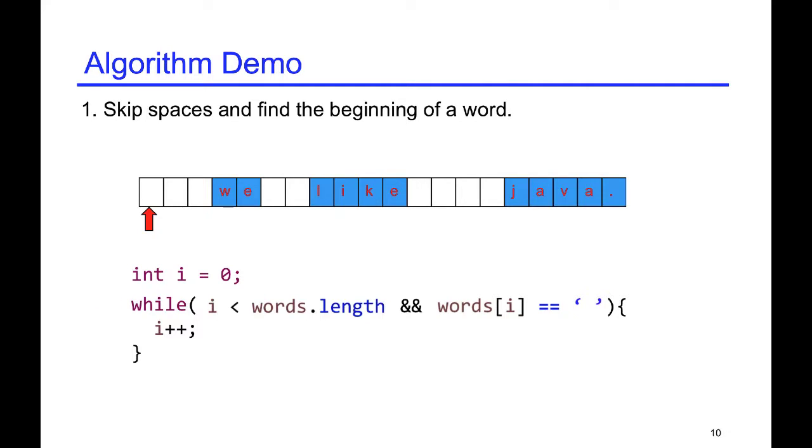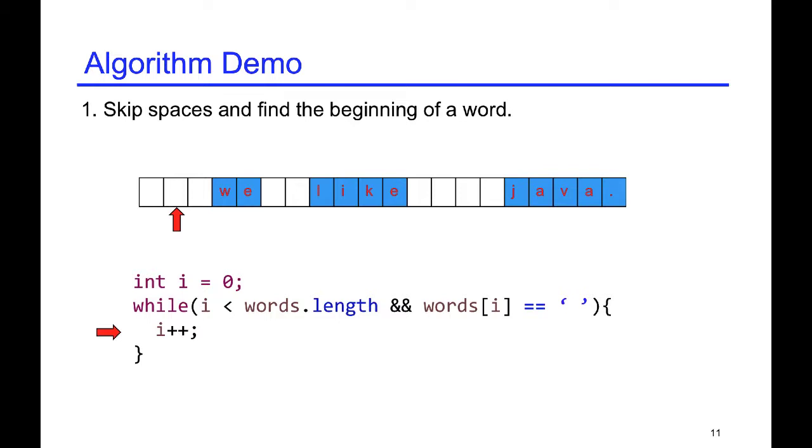Now, let's look at the execution. So, we start with the first space and skip every single space until we see the first character of a word. Current character is a space, so we move to the next, and we do that again until we see the very first word character. And we stop there.